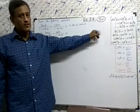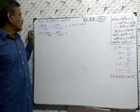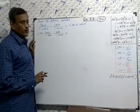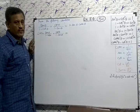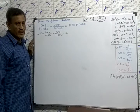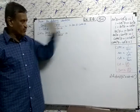Question 5.3: Prove that tan theta divided by (1 minus cot theta) plus cot theta divided by (1 minus tan theta) equals 1 plus sec theta cosec theta.